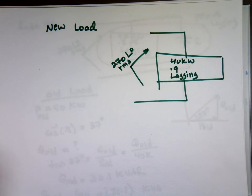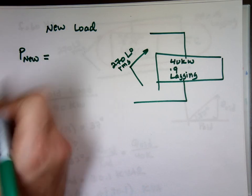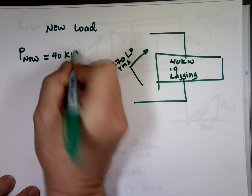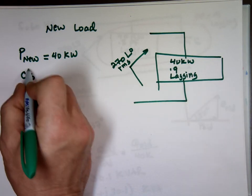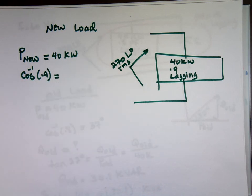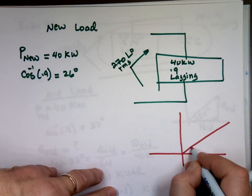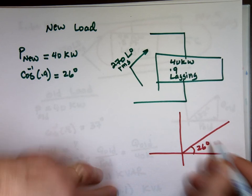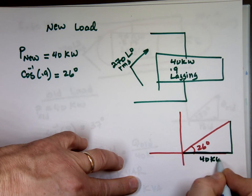So let's do the math again. We can find the complex power. We know p nu, which is 40k. We know it's lagging power factor. So cosine, negative cosine of 0.9. 25.8. How about 26 degree? We can live with that. So this is what I know. The new one now. This angle is 26 degree. I know this value is 40 kilowatts. Can I find q here?